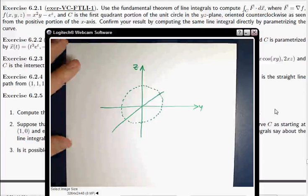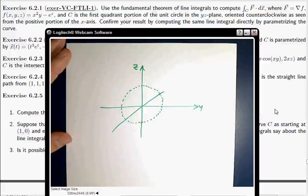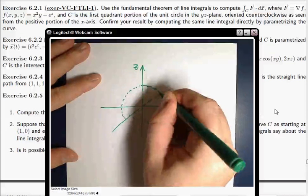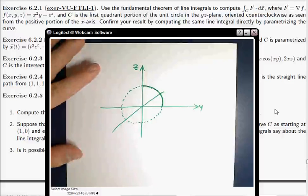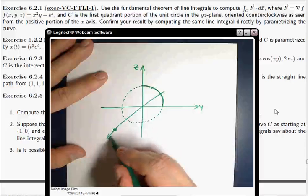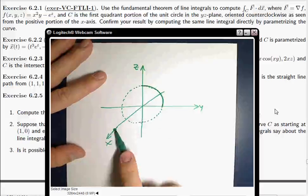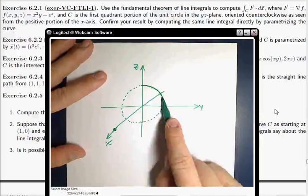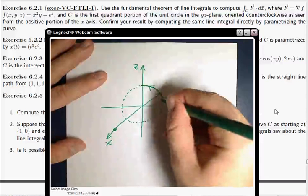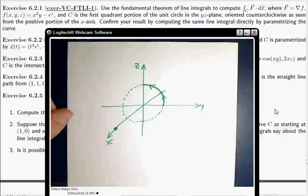And let's see, I want the first quadrant portion of the unit circle in the YZ plane. Okay, so I want that bit of that unit circle. Oriented counterclockwise as seen from the positive portion of the X-axis. Right? So as seen from over here, I want this to look counterclockwise, and that means like that. Cool? Okay. Good deal.